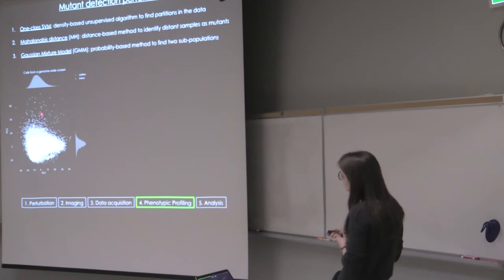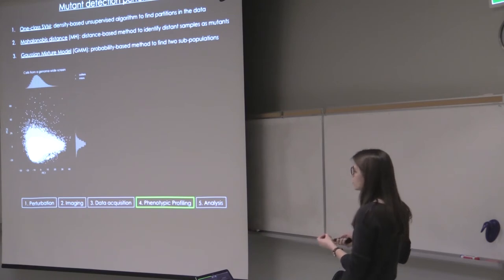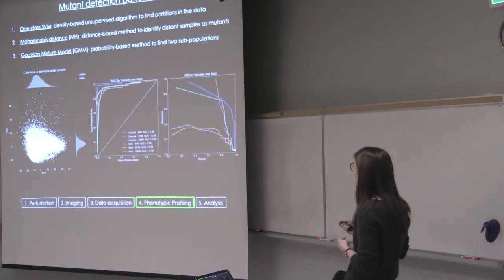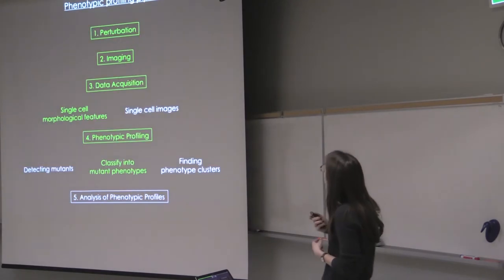And here, each dot represents a cell in the PC space. And here we can find that the white ones are wild type looking cells and the other ones are mutants. And for each gene deletion background, we can then quantify the percentage of the mutant cells to come up with the penetrance value. And we can capture most of the positive and negative controls really well with the first two methods here.